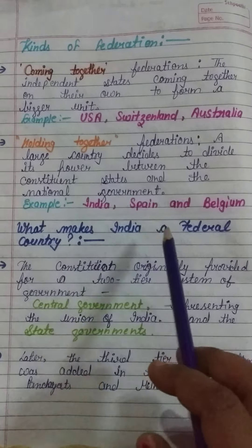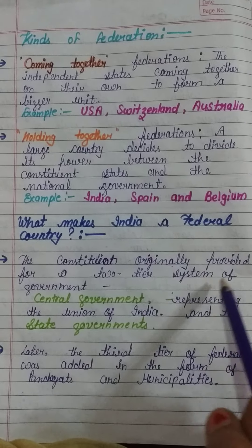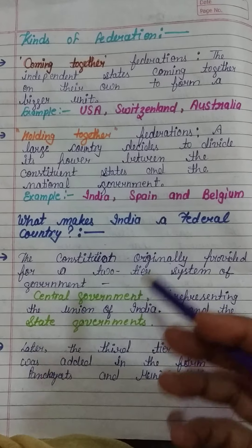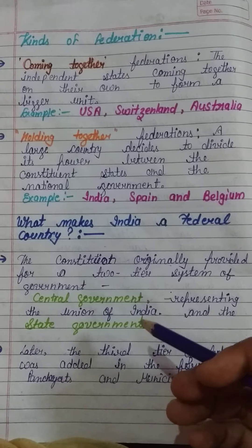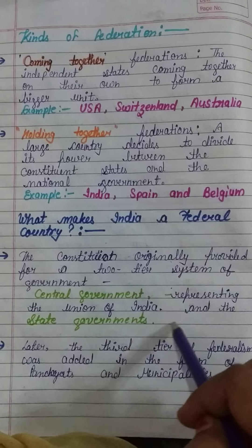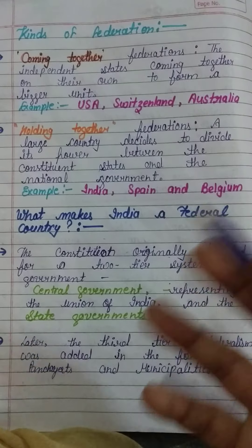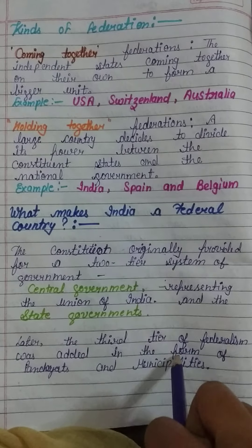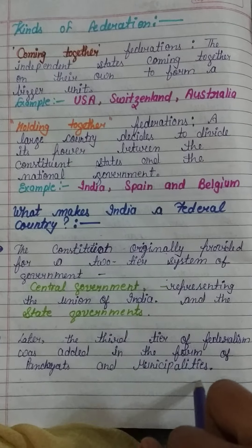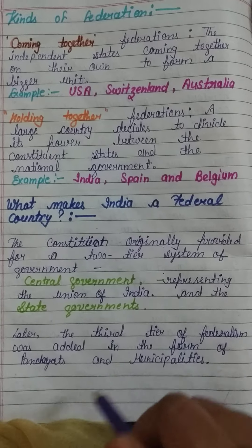What makes a federal country? The constitution originally provided for a two-tiered system of government: the central government and state government. Our constitution divided the government into two parts — central and state — where the central government represents the Union of India fully and completely, and the state government represents itself. Later, a third tier of federalism was added in the form of panchayats and municipalities.